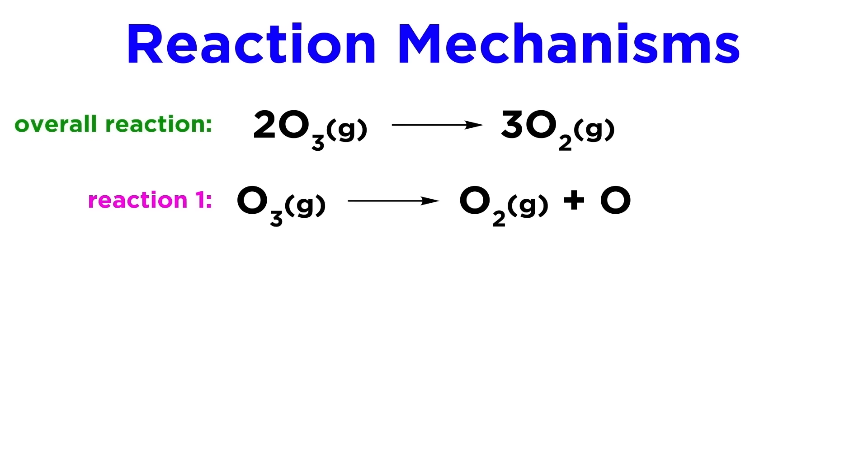First, a molecule of ozone will lose a singular oxygen atom to become diatomic oxygen, and then that lone oxygen atom will react with another molecule of ozone to generate two more molecules of diatomic oxygen.